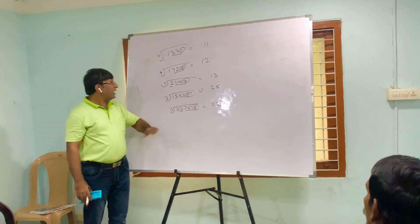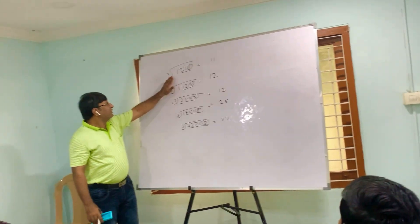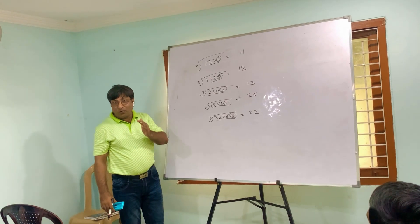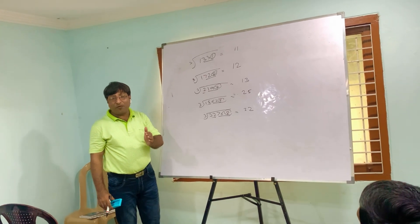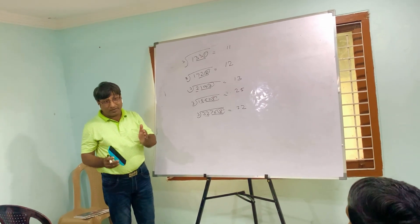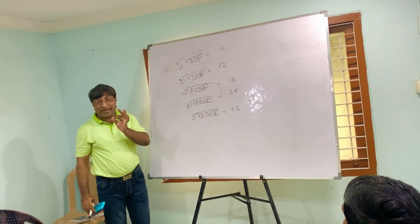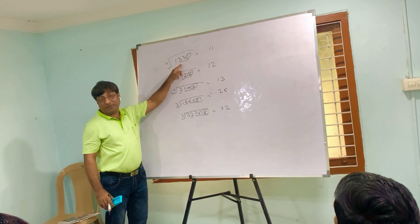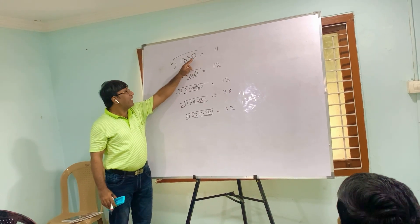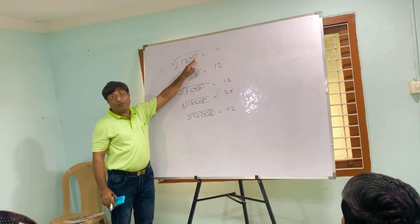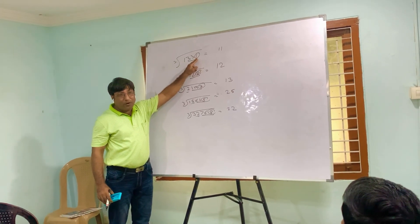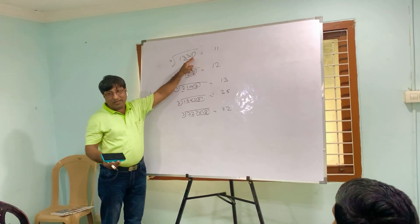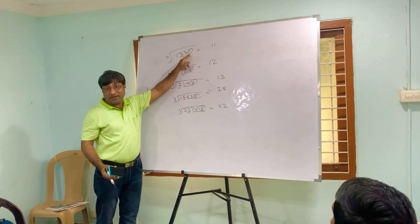To summarize the technique: make a group of 3 digits from the right, and check what the unit digit of the cube is. For example, if the unit digit is 1 and you multiply 1 three times, the unit remains 1.